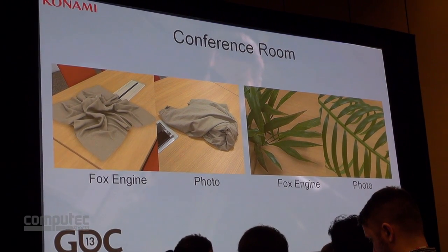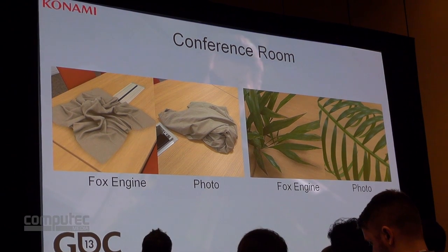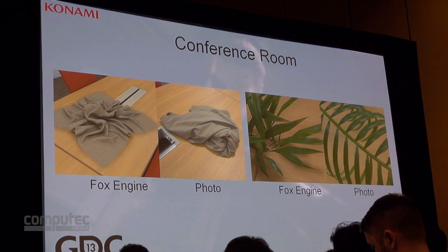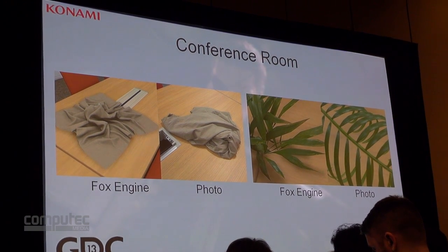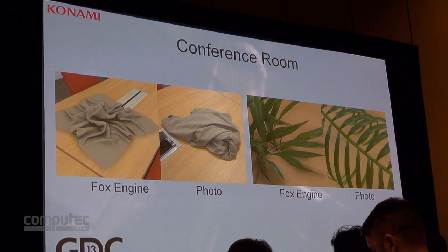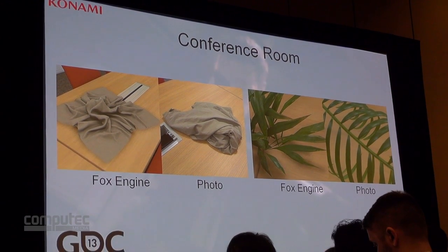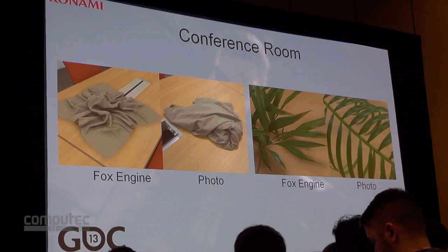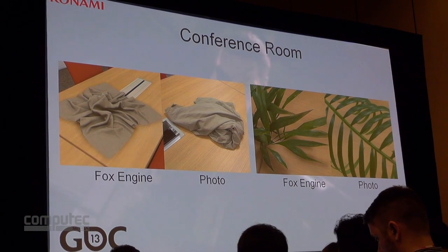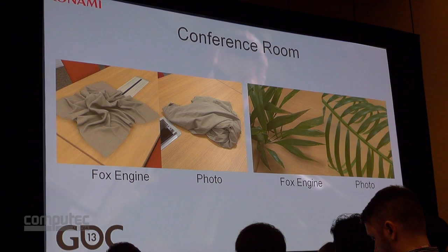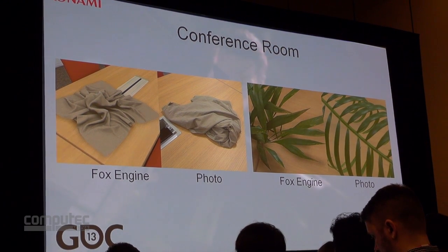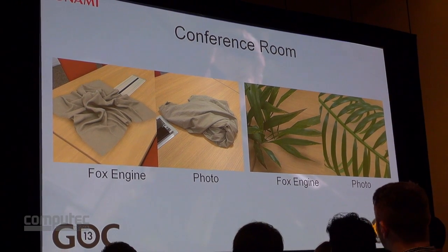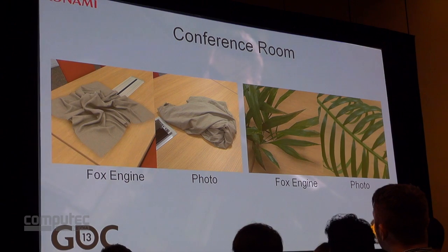These images of cloth and leaves — the left image is rendered in FOX, the right is a real photograph. We sure do think it looks quite similar. The asset creators can check very easily for any inconsistencies when creating their assets. We are able to keep our textures looking like real life even when using linear space lighting. Texture creation will be touched on by Mr. Suzuki in the next talk.